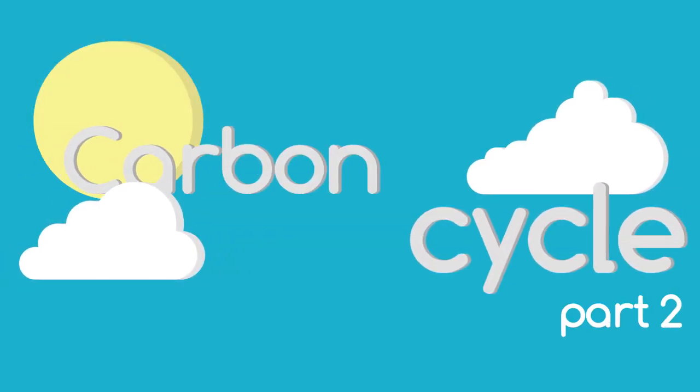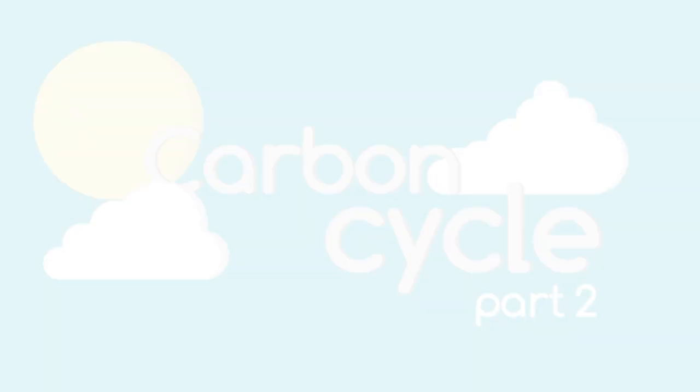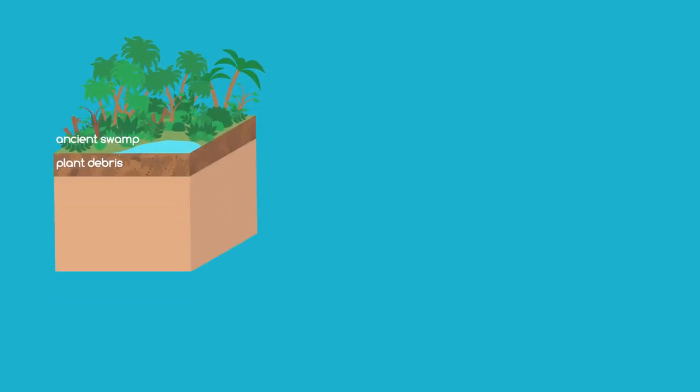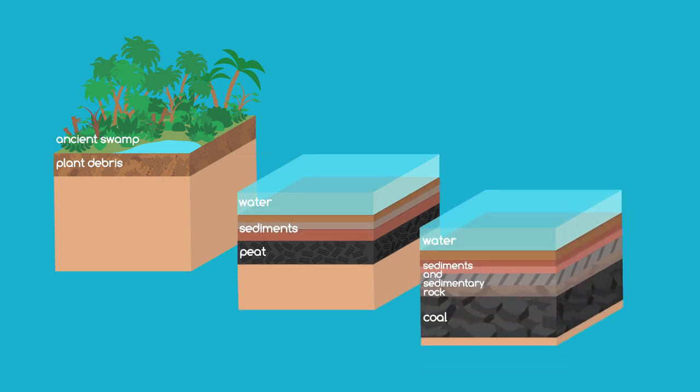Now let's look at mankind's influence on the carbon cycle. Hundreds of millions of years ago, huge quantities of living things died and were trapped in layers of rock. These formed our fossil fuels of coal, oil and natural gas.